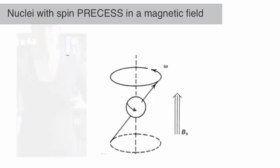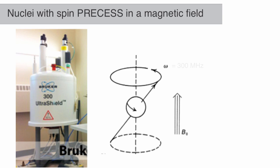In fact, spectrometers are named for the approximate resonance frequency of protons in that spectrometer. In a 300 MHz spectrometer, protons precess at about 300 MHz, or 300 million cycles per second.